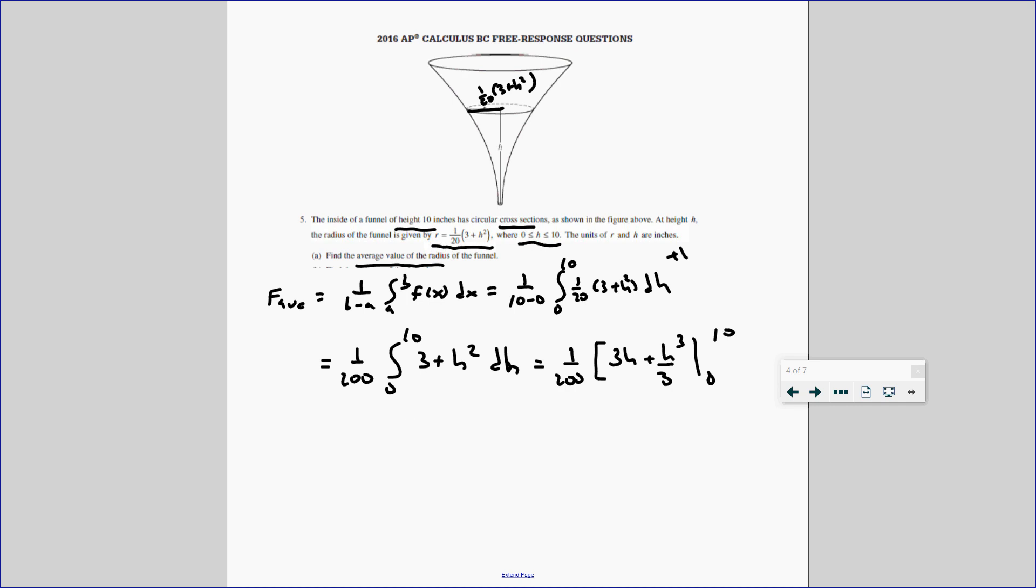And we don't worry about the 0, we're going to do the fundamental theorem, f of 10 minus f of 0. So we get this 1 over 200 times f of 10, that becomes 300 minus 3,000, right, 10 cubed over 3. We don't worry about the 0, because that just becomes 0 right there. And there's our answer. Now, we should include units. This is the average radius, and the radius, they tell me, is in inches. So inches, don't forget your unit.